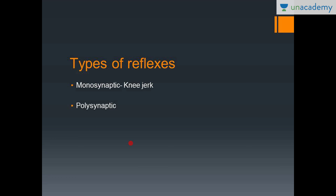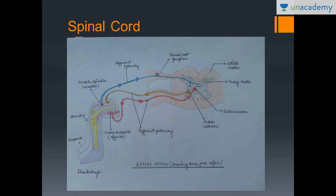There are two types of reflexes: monosynaptic and polysynaptic, based on the number of synapses involved. Looking at this diagram of a knee jerk, if you give a stimulus to the muscle around the knee, the impulse is carried by this blue nerve fiber — the nerve fiber of the dorsal root ganglion — into the spinal cord at the dorsal horn. The information then moves from the dorsal root ganglion across a single synapse to the motor neuron.